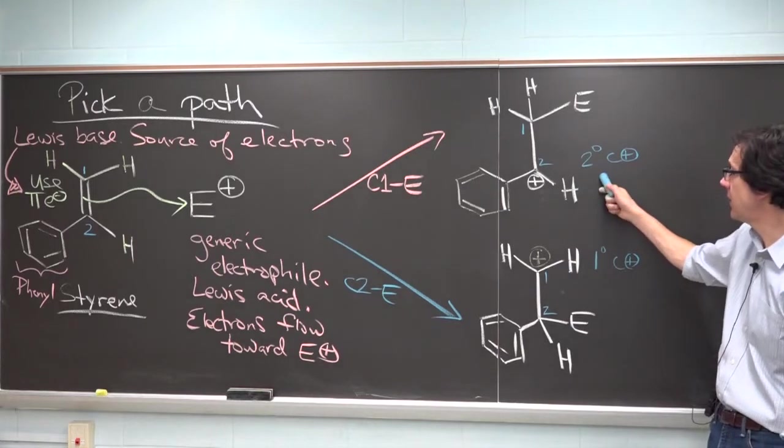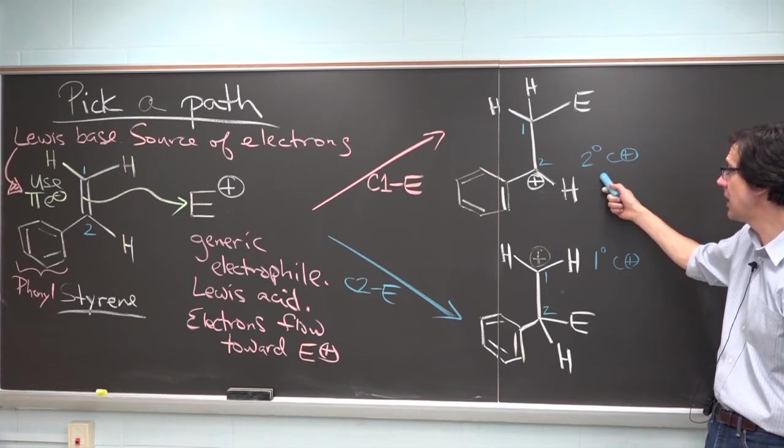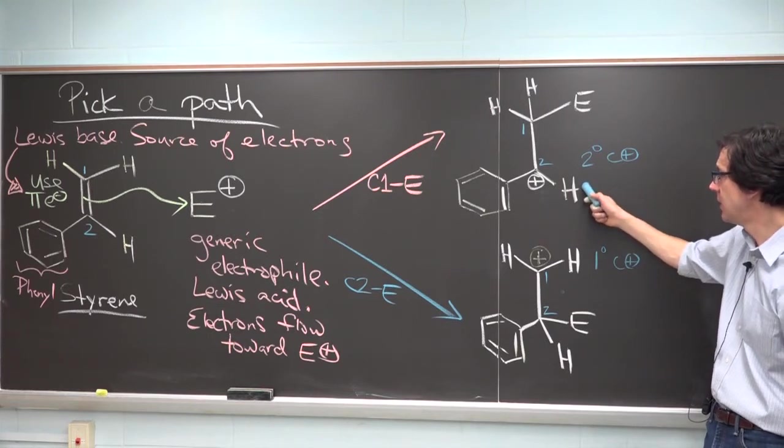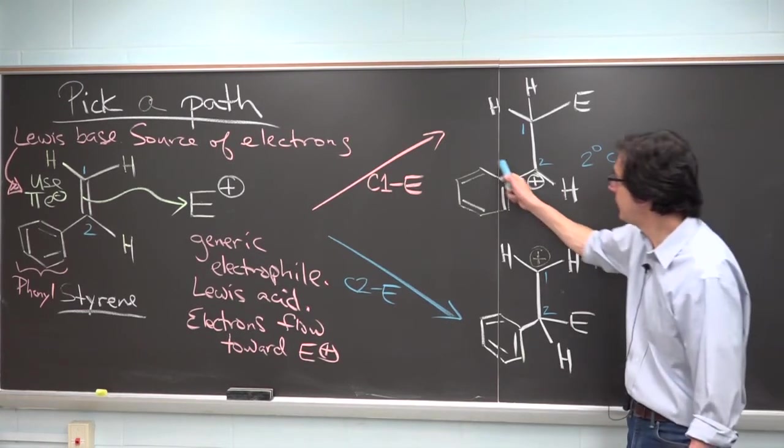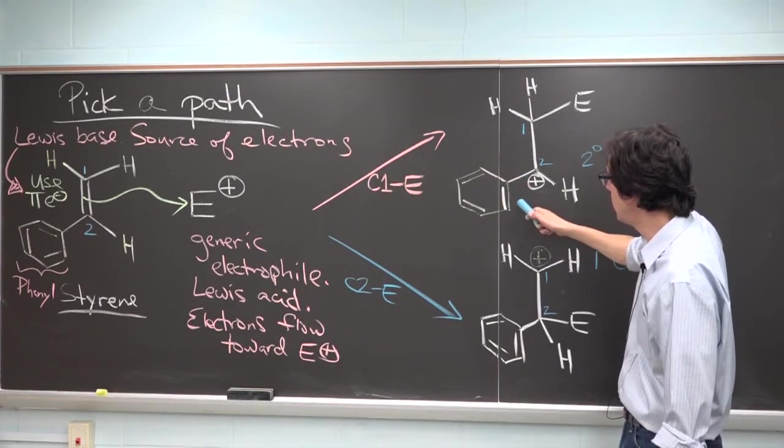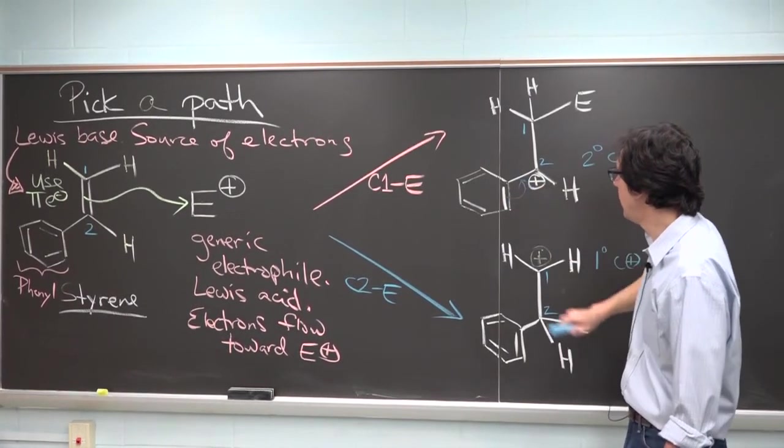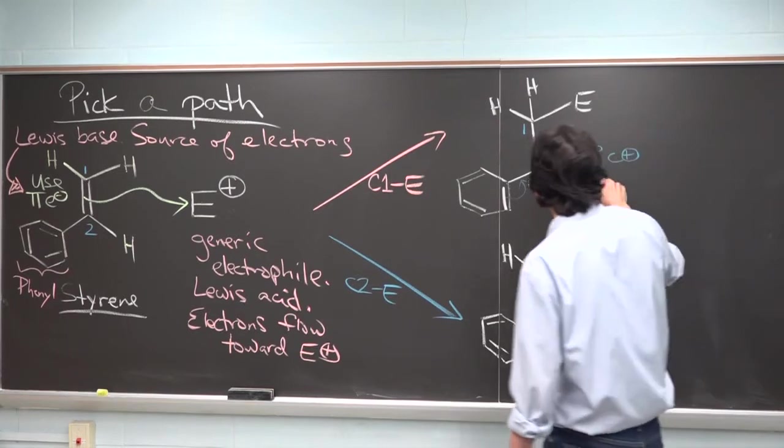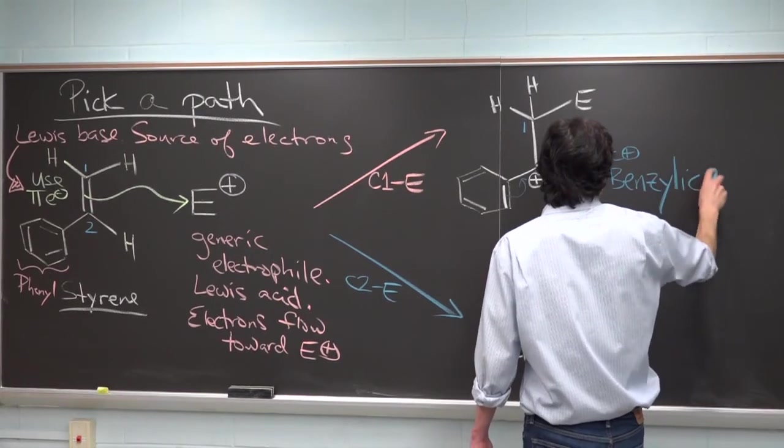Now let's go back to this secondary carbocation for a second because it's actually not just your run-of-the-mill secondary carbocation. What else is special about this particular carbocation right here? Besides being secondary, how else could it be stabilized? It's stabilized by resonance from this benzene ring. I won't draw out all the resonance structures, but maybe you should. There are three other resonance structures that you could draw by bringing some electron density from the phenyl group over toward the carbocation. So this is not only secondary, it's secondary and benzylic.